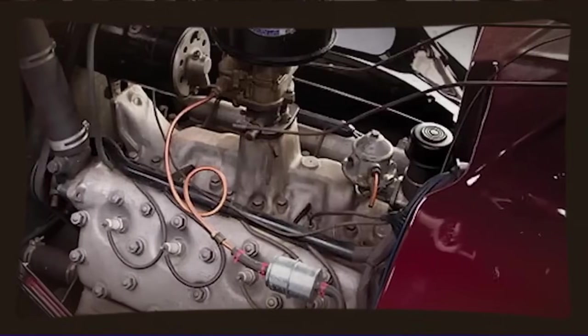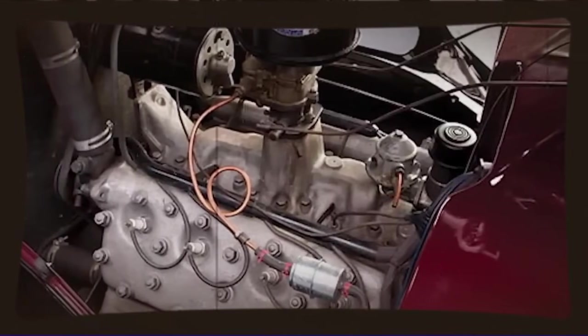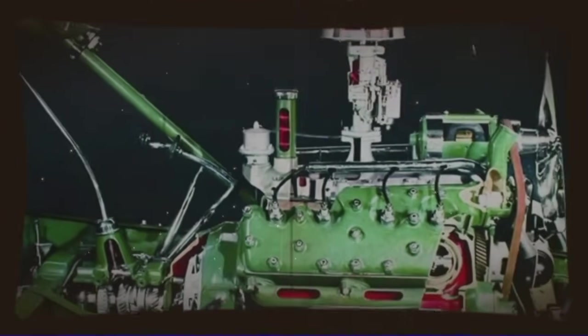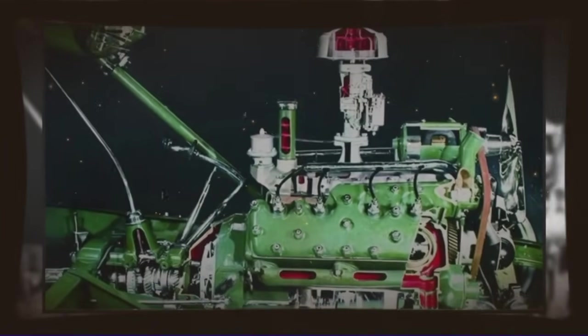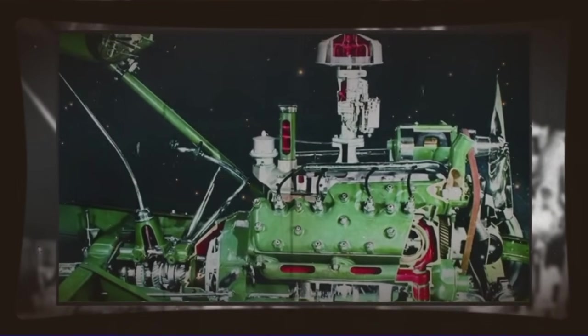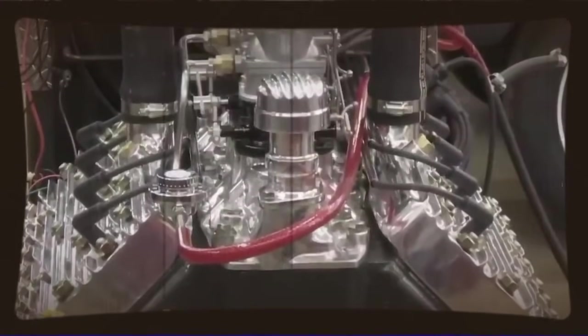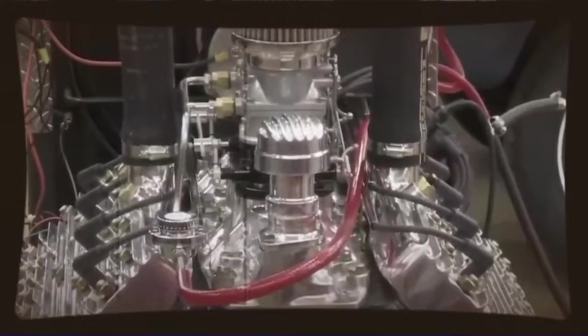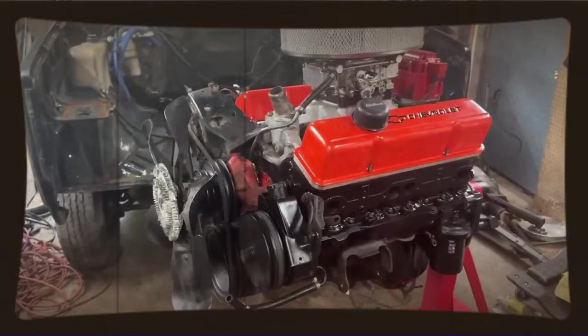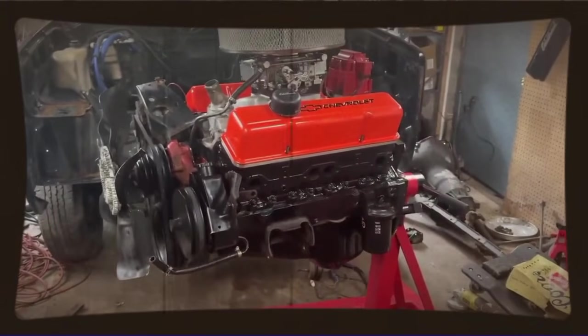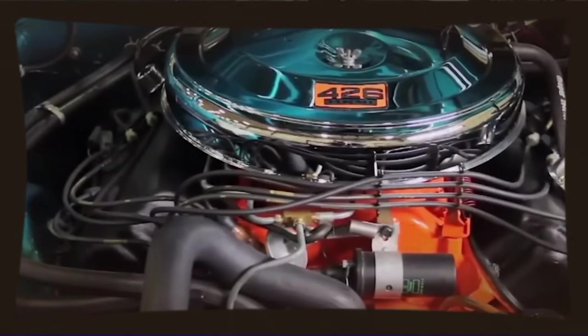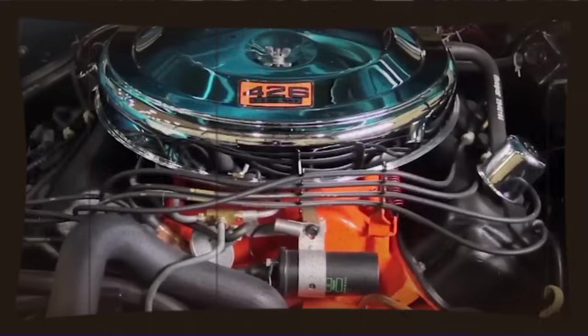The fuel quality of the era also played a role. Gasoline in the 1930s wasn't the refined, consistent product we have today. Octane ratings varied wildly, there were impurities, and the fuel could behave quite differently depending on where you bought it. Four-stroke engines were somewhat more tolerant of these variations. Two-stroke engines with their more sensitive tuning and higher operating temperatures could be more finicky about fuel quality. This wasn't an insurmountable problem, but it was another mark against the design in terms of real-world practicality.